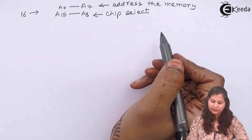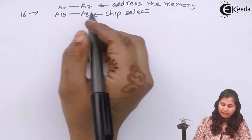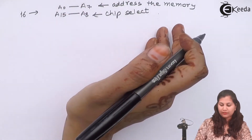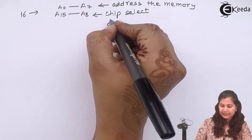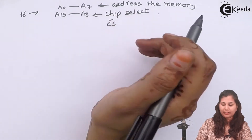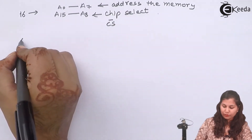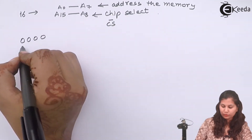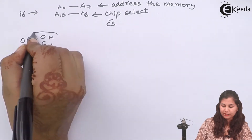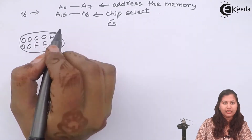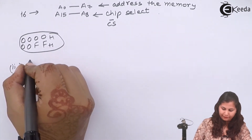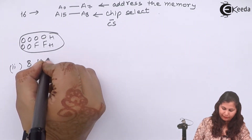Lines A15 to A8 are kept at logic 0 because the chip select signal is active low, and A0 to A7 can have any value from 0 to 1. So the address range for this chip starts at 0000 0000 0000 0000 and goes up accordingly. Now let's take the second part: 8 kilobyte memory.